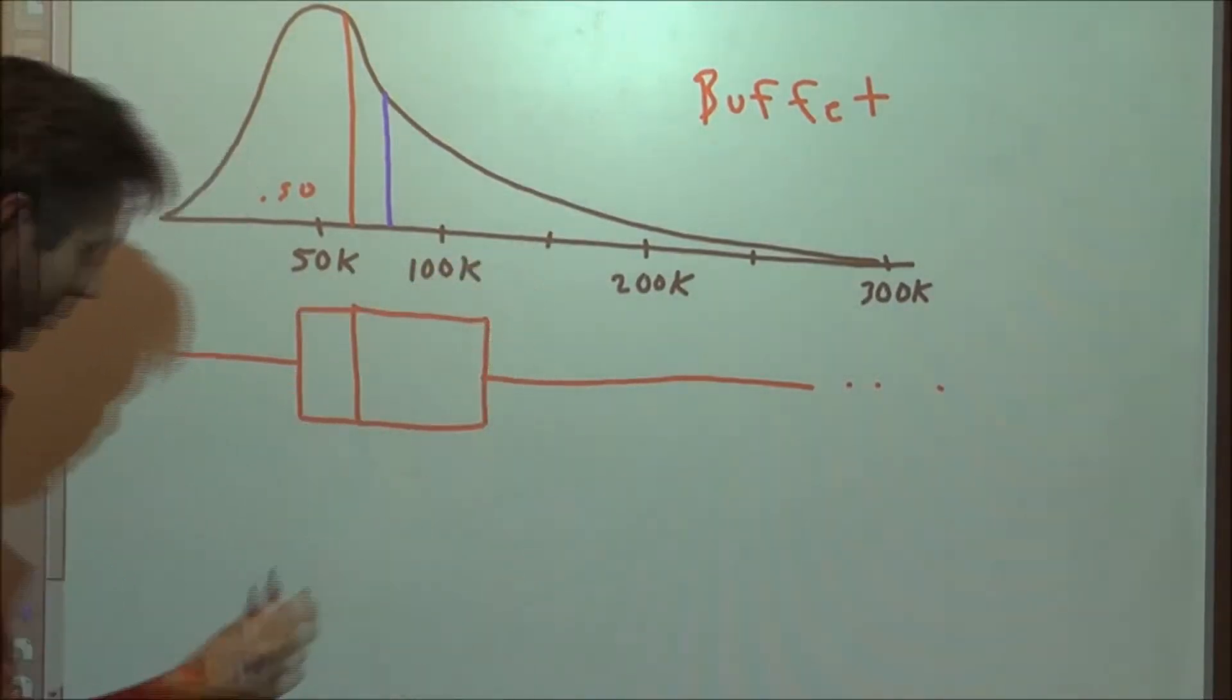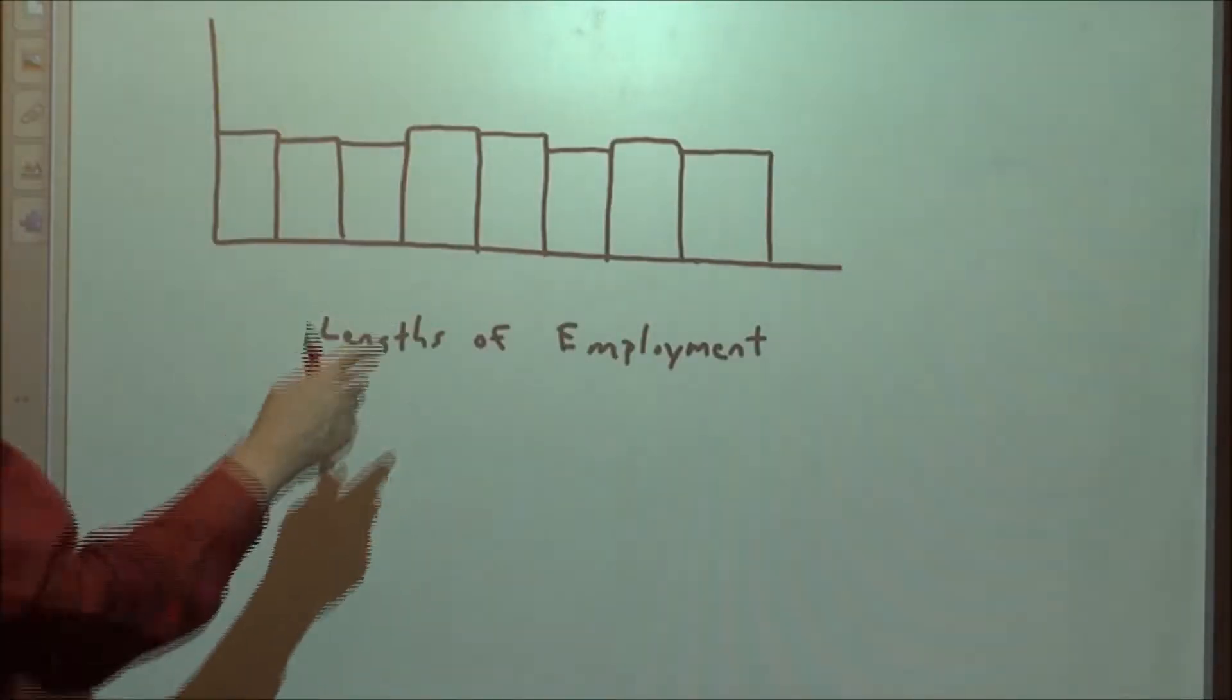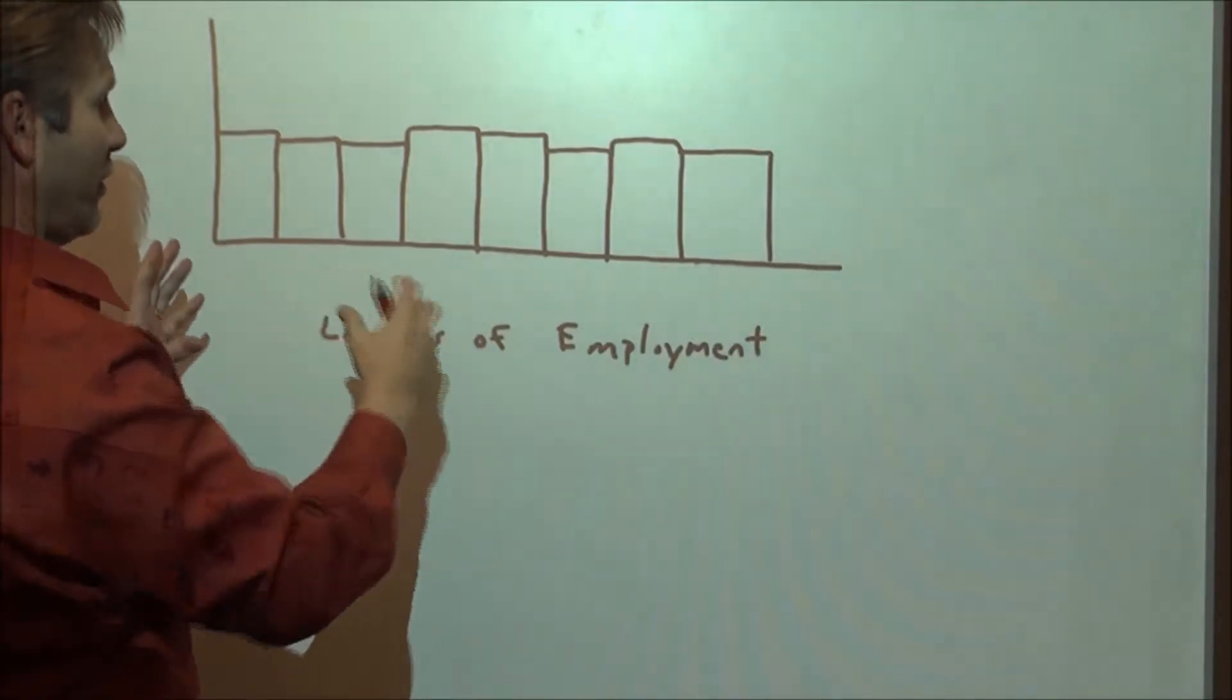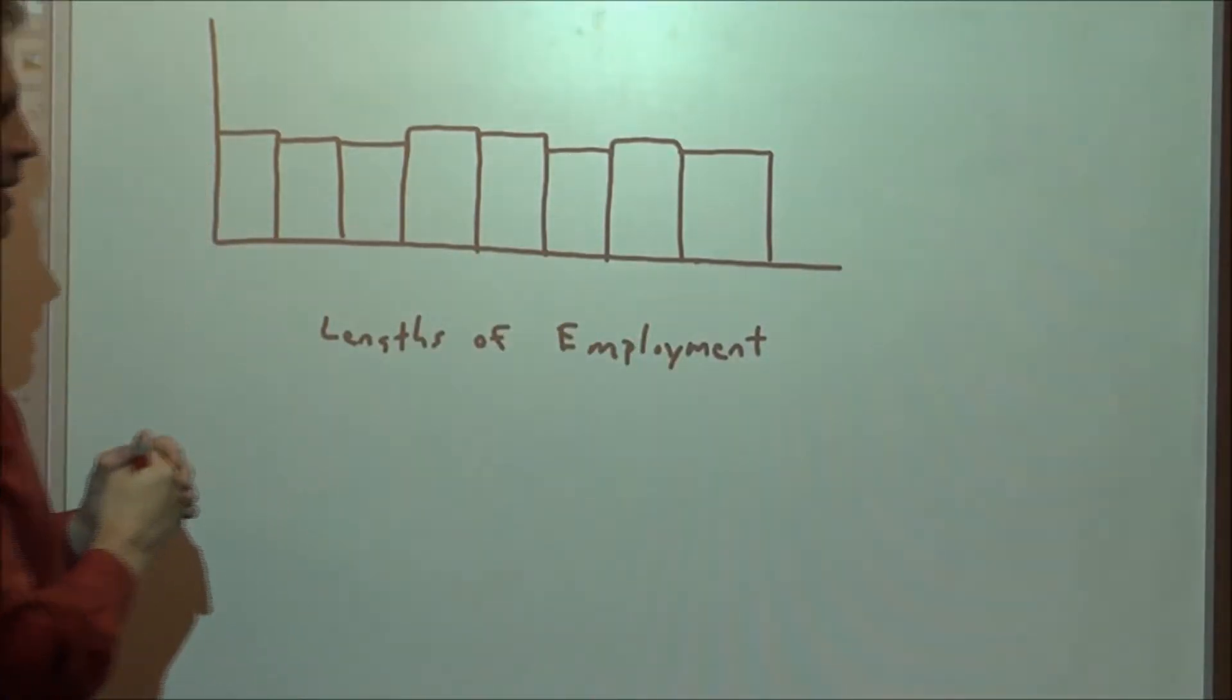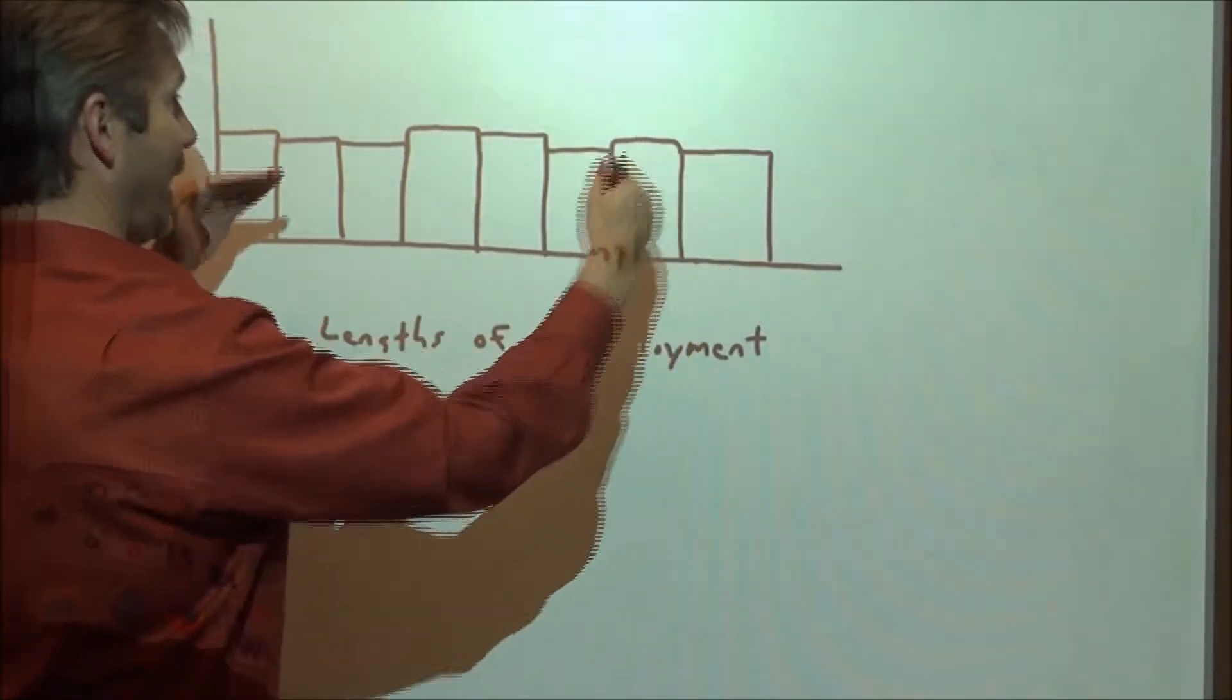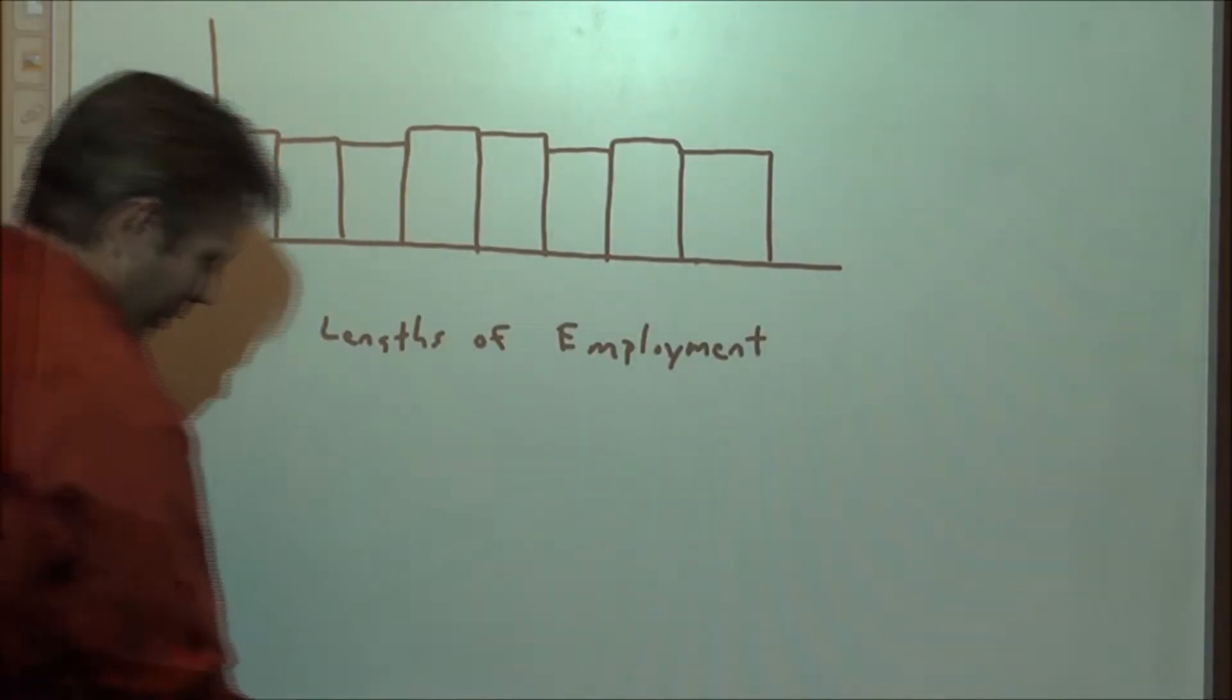Anyhow, skewed right, we're going to report the median and the quartiles. Now, if instead we say there's some company where the lengths of employment are uniformly distributed, probably a good company to work for if people are staying there a long time.